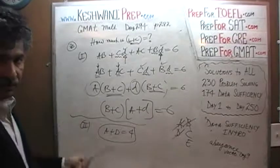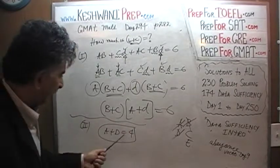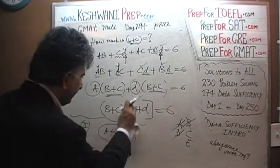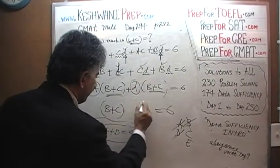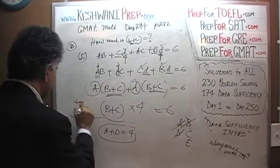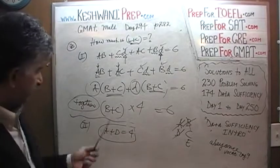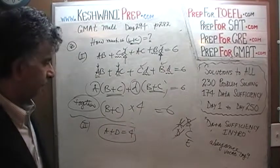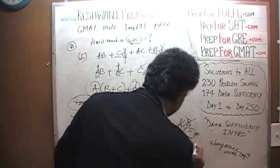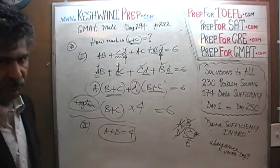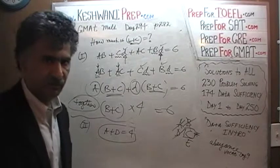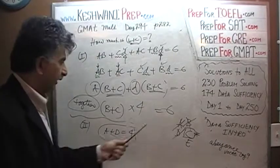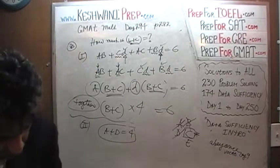As soon as we put the two statements together, we are done. A plus D is 4 — we substitute 4 into (B plus C) times (A plus D) equals 6. When we put them together, A plus D is 4, so B plus C must be 6 over 4, which is 3 halves. The point is not what the value is, but do we have enough data to ascertain the value of B plus C? The answer is yes. The answer is C.